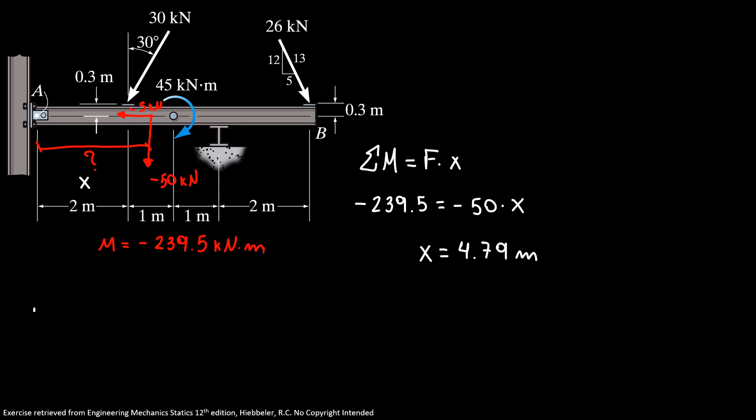So we find the distance and now our resultant force equals minus 5 squared plus minus 50 squared. So our resultant force, the magnitude of our resultant force is 50.2 kilonewtons.